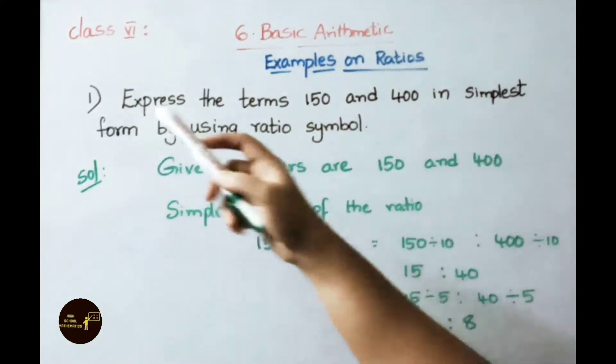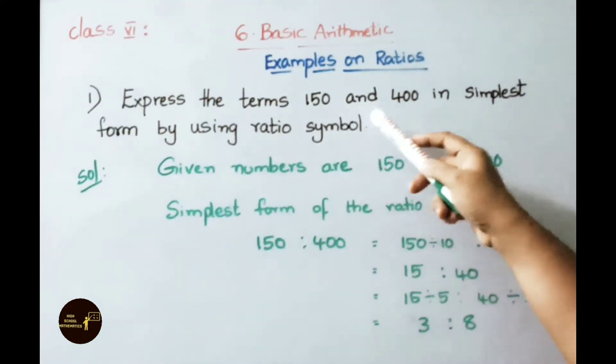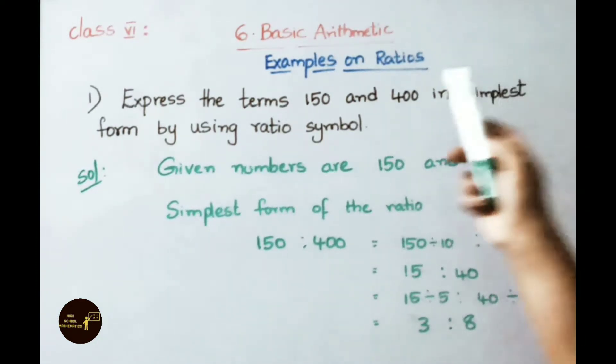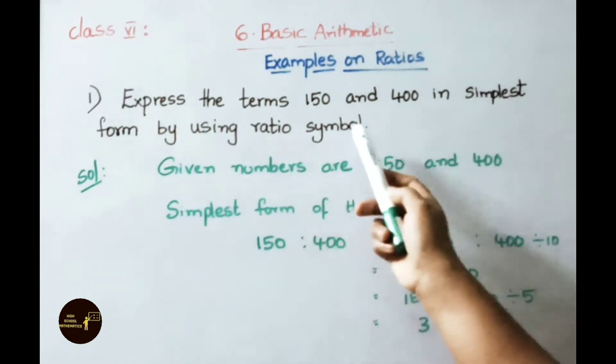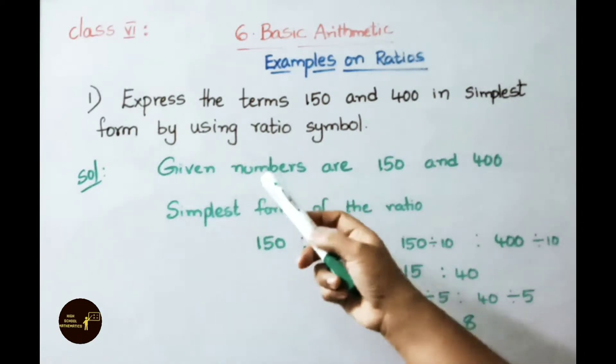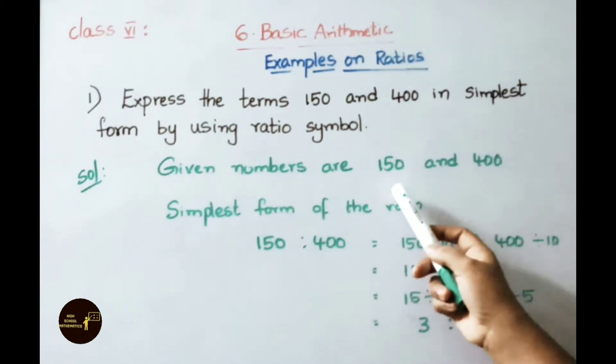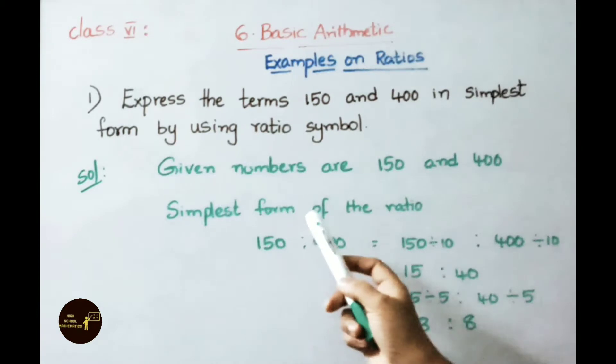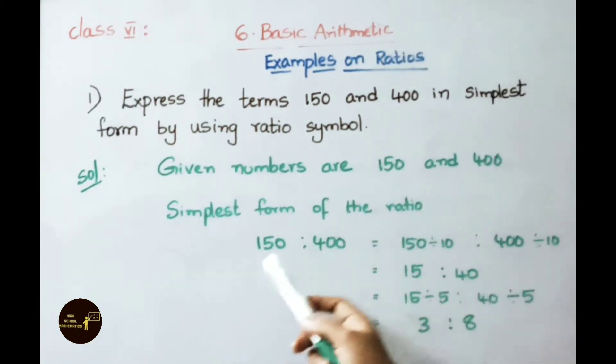See now example 1. Express the terms 150 and 400 in simplest form by using ratio symbol. See the solution. Given numbers are 150 and 400. Simplest form of the ratio 150 is to 400.